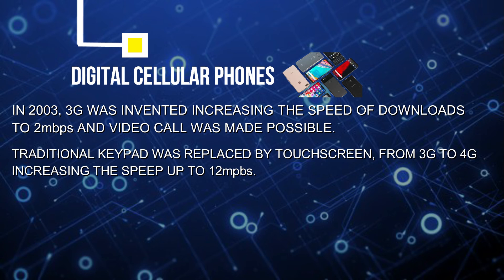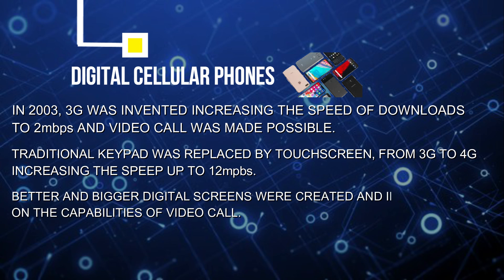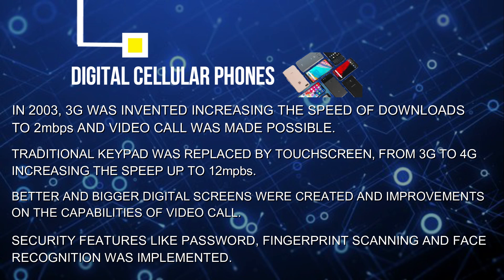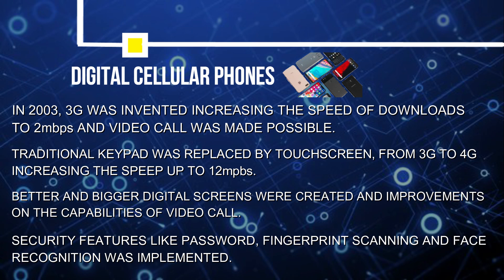From simple to smart, touchscreens replaced the traditional keypad. From 3G it went to 4G, making the download speed up to 12 Mbps. Digital screens were made better and bigger, and video calling capabilities improved significantly. Security features were also implemented, from passwords to fingerprint scanning and to the current face recognition, making the use of cellular phones more simple and smarter.